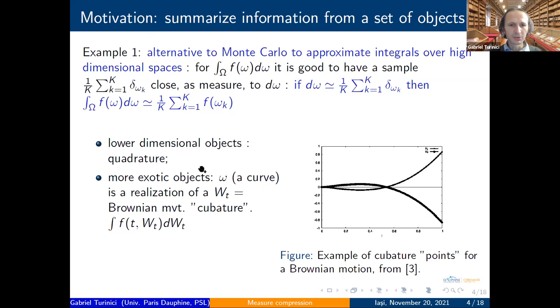But it can be other objects, for instance, more exotic examples are when omega are the realization of a Brownian motion. So this omega is a curve—an oscillatory path of the Brownian motion—and you want to approximate that. The question is how to approximate this measure on the set of old realizations of Brownian motion. So again, this is not a deterministic approach. You replace the realization by some scenarios.